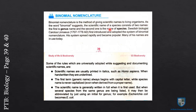The scientific name consists of two parts: the first is the genus name, and the second is the species name.